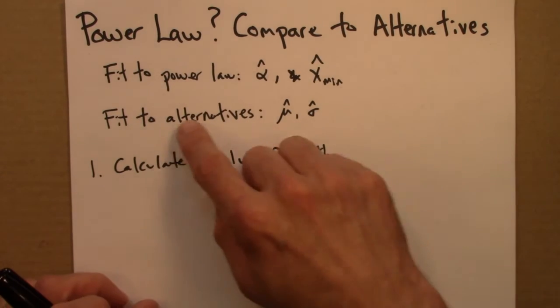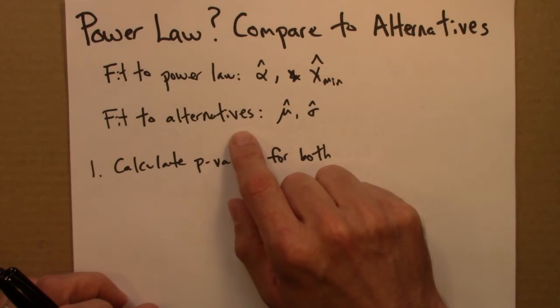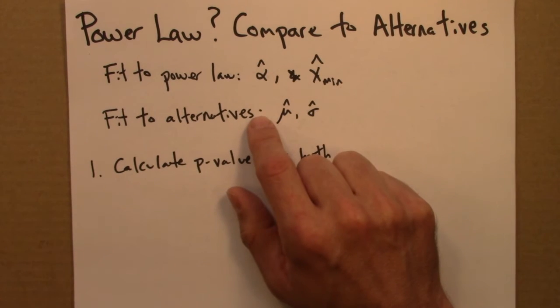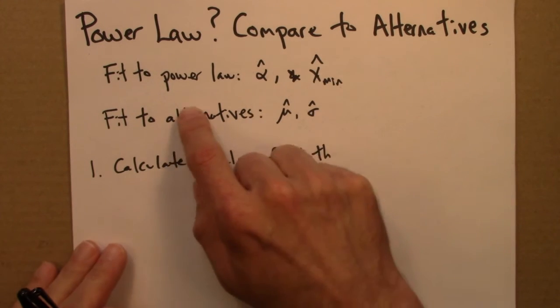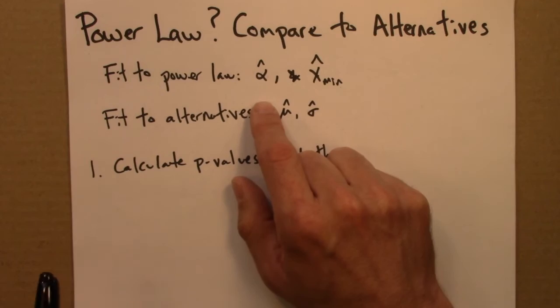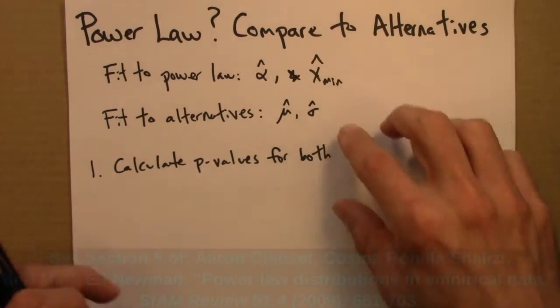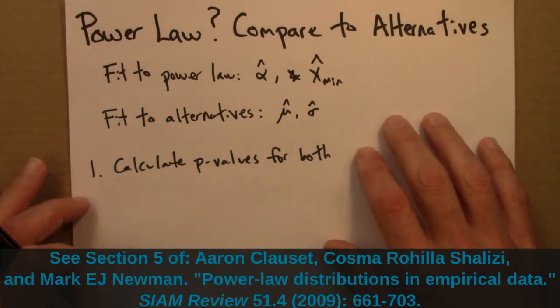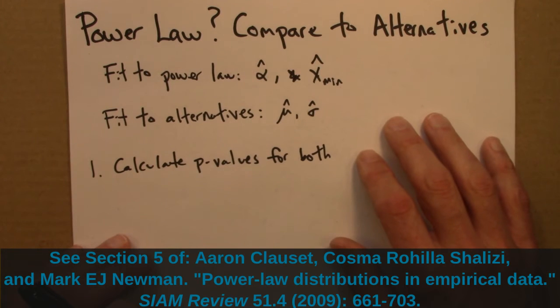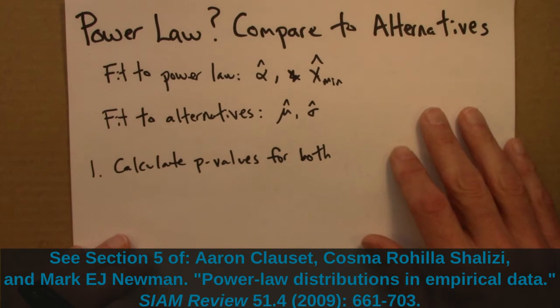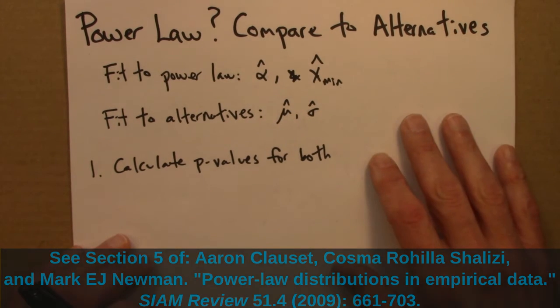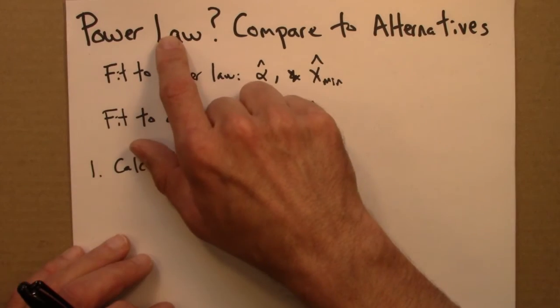Of course, you can never try all the alternatives, but it might be good to try some of the more common ones. Exponential, stretched exponential, lognormal, and so on. And the paper by Clauset, Shalizi, and Newman, where this outline is also given, talks about some of the more often occurring, some of the more common distributions that are often confused with power laws.